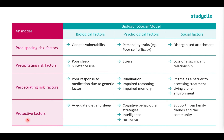Moving on to our protective factors — what helps us prevent developing a mental health disorder — adequate sleep and diet is a good biological protective factor and something relatively easy to implement. Our psychological protective factors include cognitive behavioural strategies, thinking about how we deal with stress and doing things we enjoy, as well as intelligence and resilience. If we have high resilience, we're able to bounce back. Finally, in our social factors, we have support from family, friends, and the community. If you have a good support system around you, this can really protect your mental health.